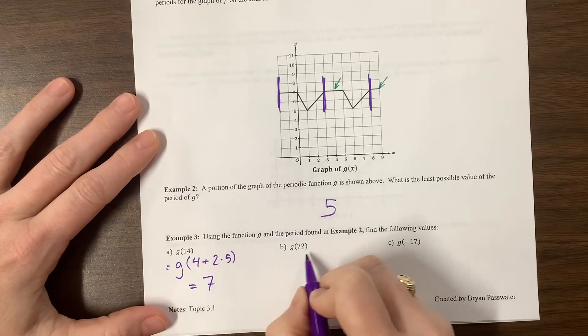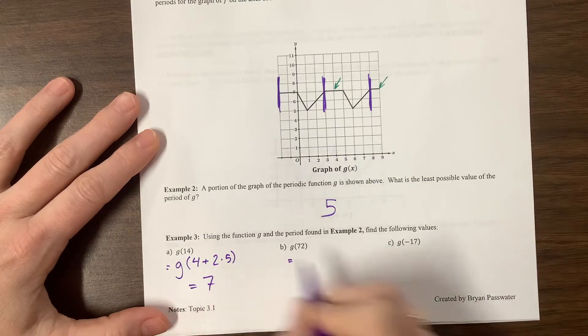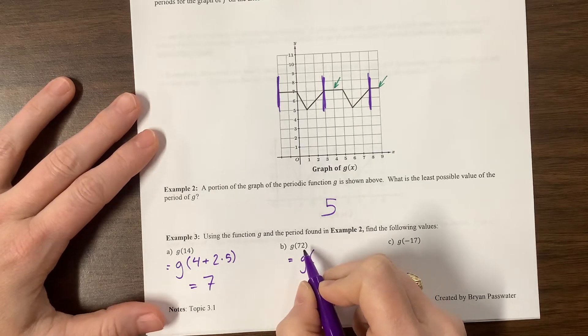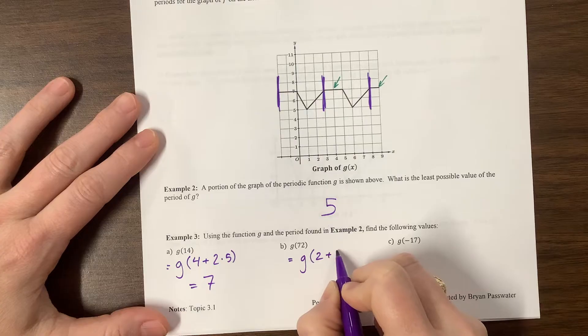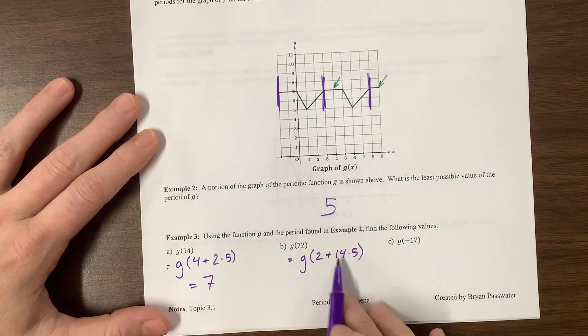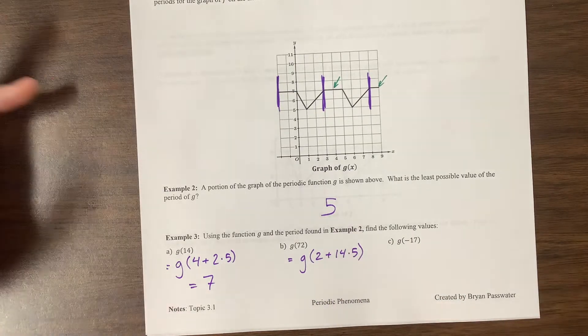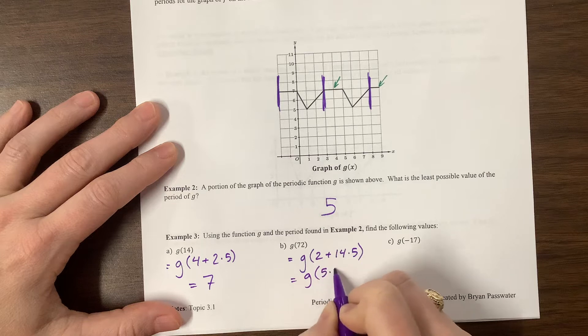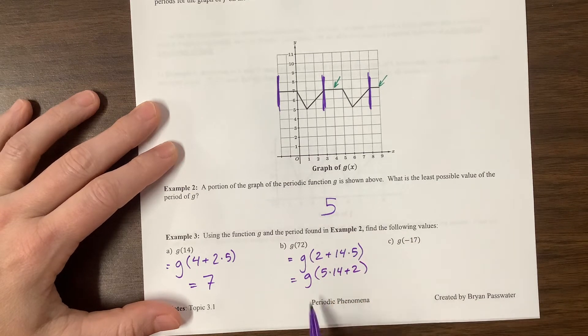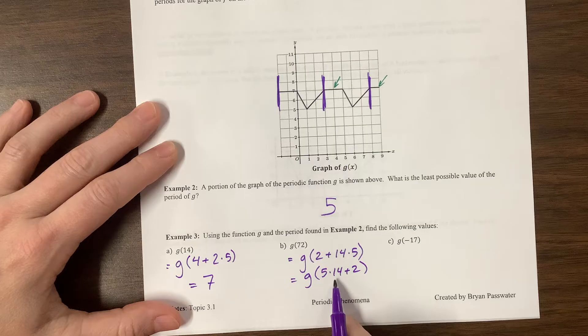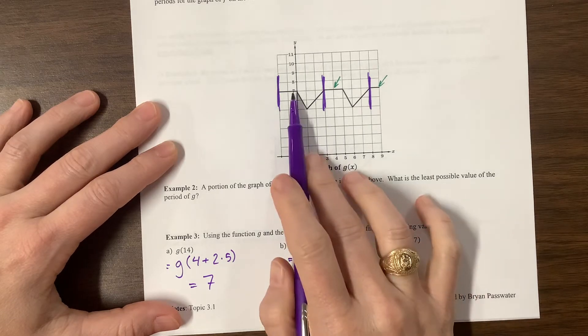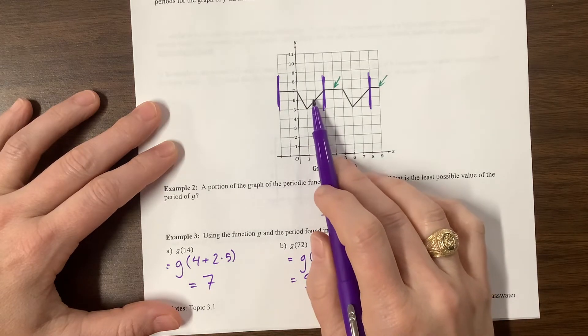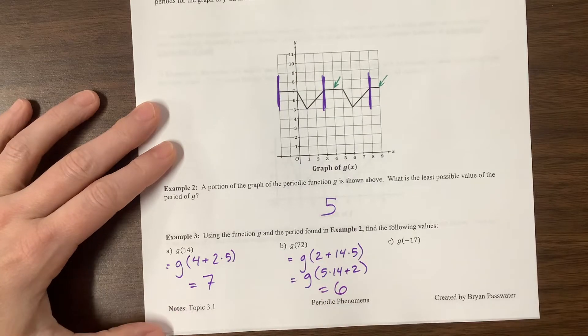The next one at 72, well, we can think of this, if I use this similar idea, this is g of, well, 70 is divisible by 5. What is that, 14? So it's 2 plus 14 times 5. And there's really no reason I'm writing this part last. I don't know. It's just what I did when I first, there's no reason you can't just say this is g of 5 times 14 plus 2. That is also correct. It's that period is going to happen 14 times. And then whatever had been at 0, well, we don't want what had been at 0, we want what had been at 2. So at 2, I have a y value of 6.